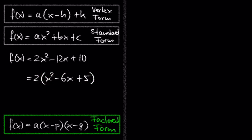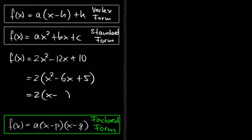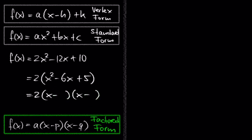In the last step, we are going to make two factors out of x squared minus 6x plus 5, which are going to look like (x minus something) times (x minus something else). We are looking for two numbers which multiplied by each other equal 5, and the same two numbers which are added together equal 6. Feel free to pause the video and find these two numbers. The two numbers are 1 and 5: 1 times 5 equals 5 and 1 plus 5 equals 6.